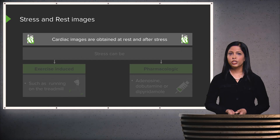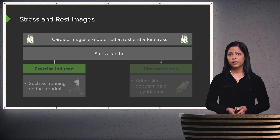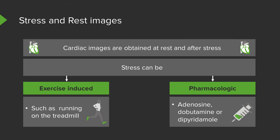Cardiac images are obtained at both stress and rest, and the two are then compared. Stress can be performed in a couple of different ways — it can be exercise-induced, such as running on a treadmill. However, for patients that can't exercise, it can also be pharmacologic. The patient can be given adenosine, dobutamine, or dipyridamole prior to the stress portion of the examination.